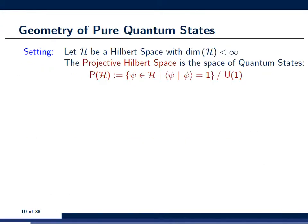But first and foremost, let's look at how geometry enters quantum mechanics in general. The basic setting is that we're looking at some Hilbert space H, which has finite dimension, and we're looking at the corresponding space of quantum states, which is also called the projective Hilbert space. This means that we only consider vectors that are normalized to one, and we identify any two vectors that are the same up to a U1 phase factor.